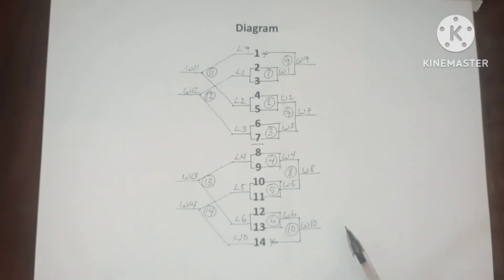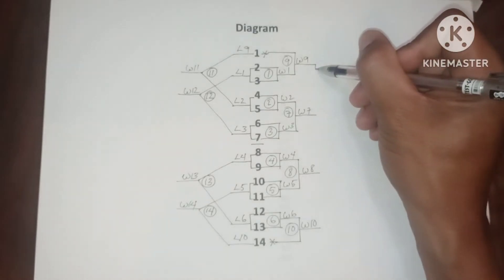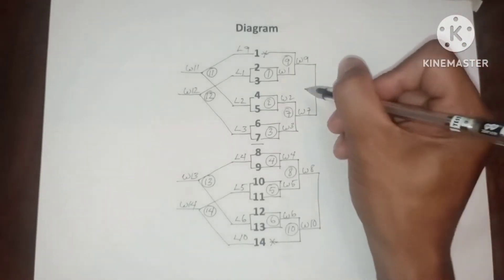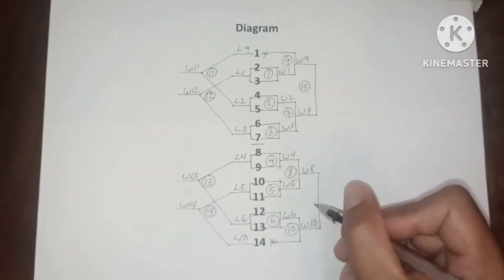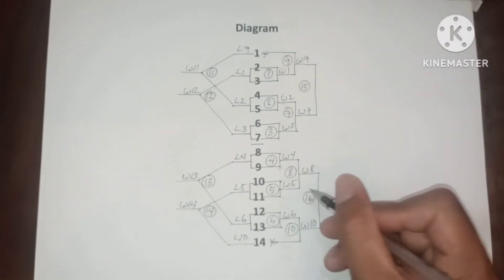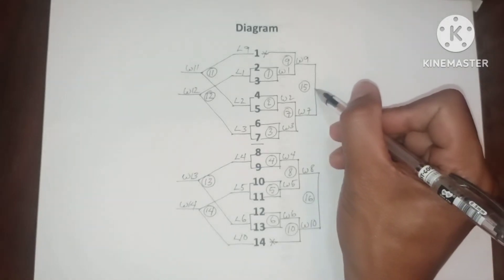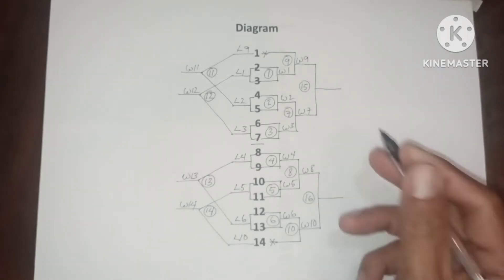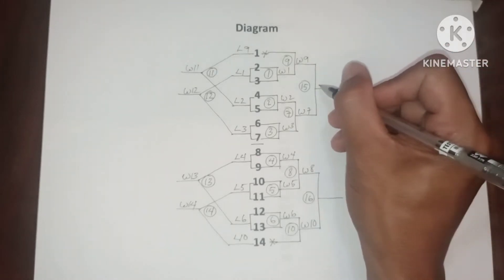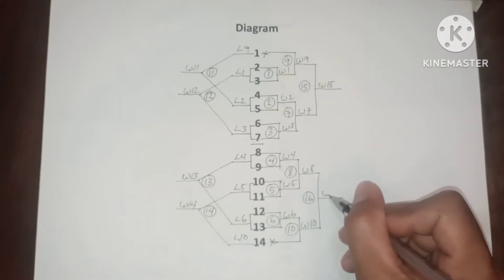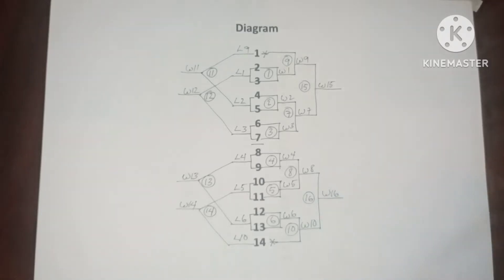Now let's go back to the winner's bracket. Game 15, game 16. Results: winner 15, winner 16.